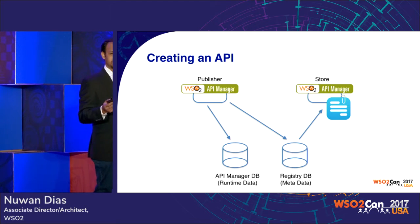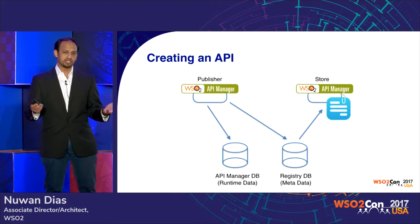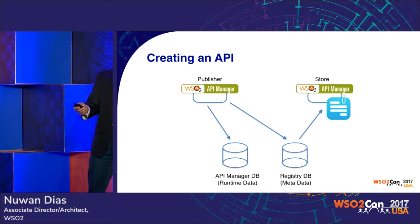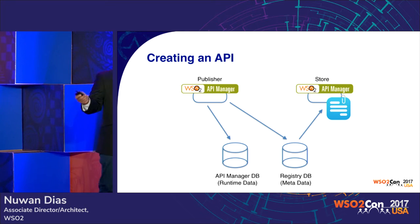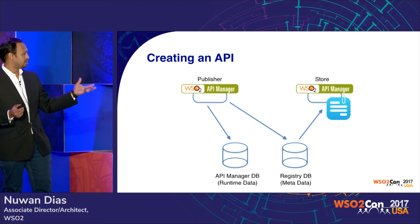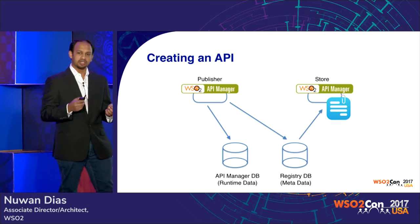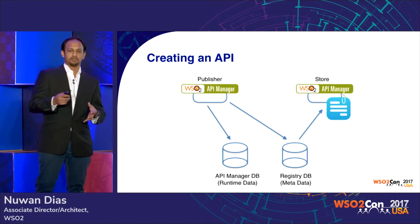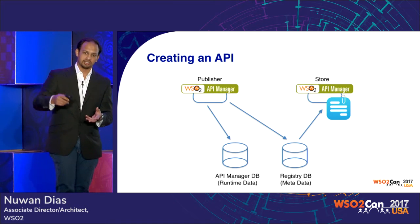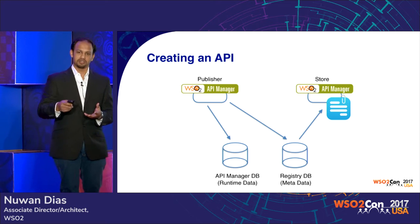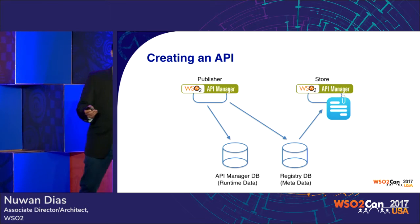What happens when you create an API on the publisher? The publisher writes meta information — not required by the gateway and key manager — to the registry, and writes runtime information required by the gateway and key manager to the API Manager database. How does this API appear on the store? The store reads information from the registry periodically — not on demand — and creates an index in its local file system. Whatever you see on the store UI is from this local file system, not directly from the registry; a periodic job runs and indexes the data locally for performance reasons.